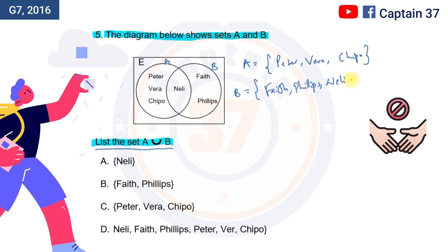Important to note that even in this one, which is A, there is also Nelly. So what we're supposed to now do is to list the sets of A union B. Meaning, if these were brought together, what elements will be there?